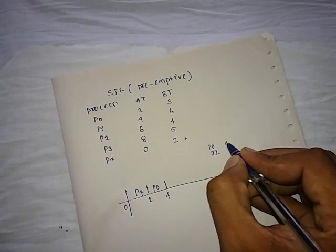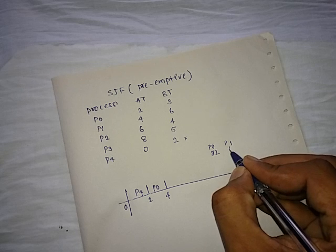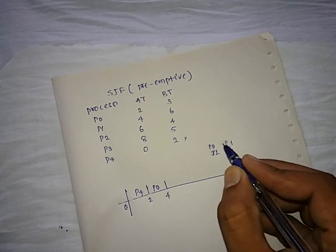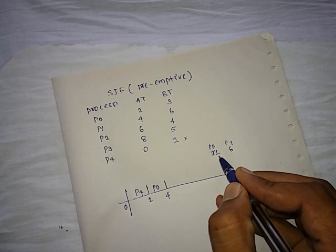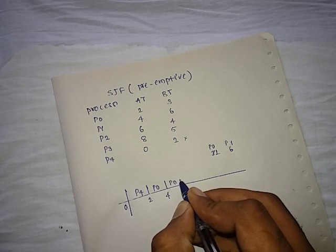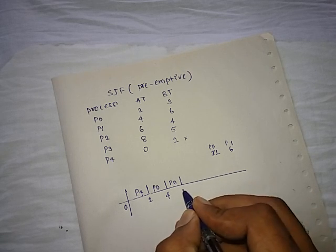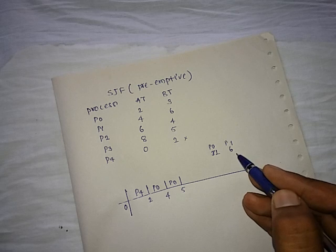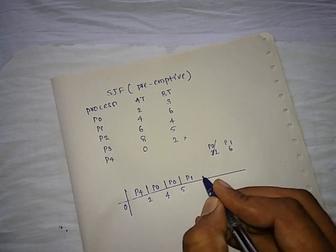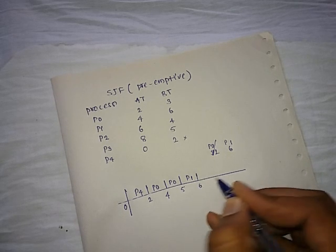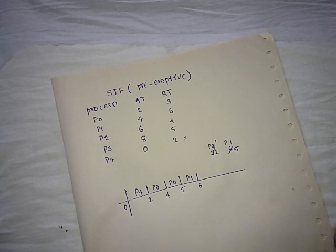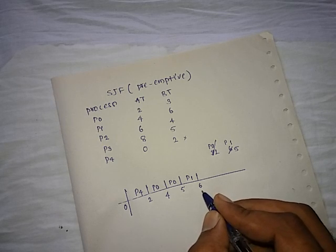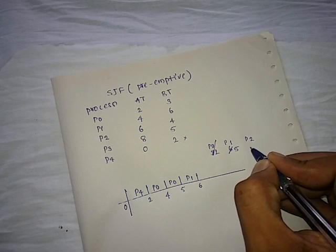At time four, the next job P1 arrives with burst time six. Now at time four we have two jobs in the system and we apply Shortest Job First. The shortest job is P0, so we schedule P0 again up to time five. There is no new job arriving at five, so P1 remains. We allocate P1 up to time six, reducing its burst time by one to five. At time six, P2 arrives with burst time four.